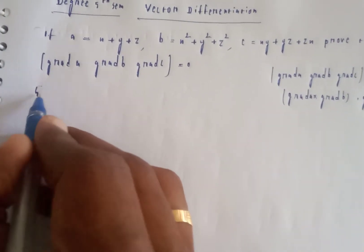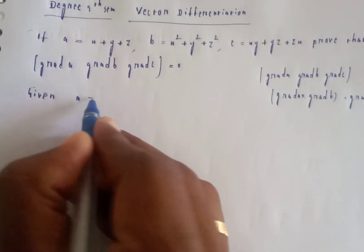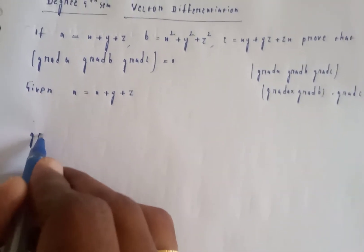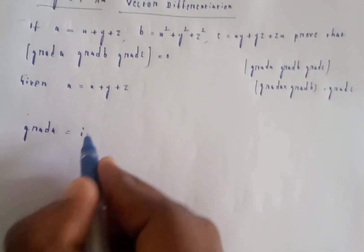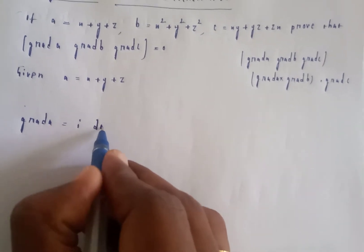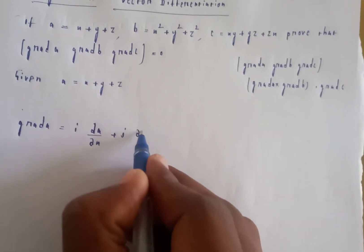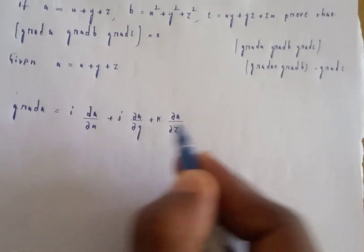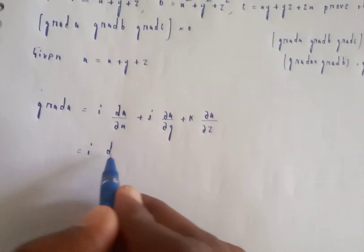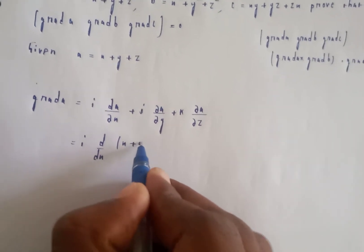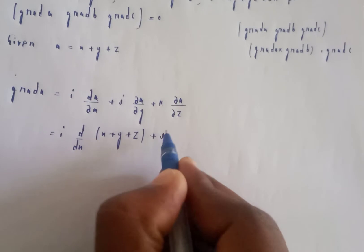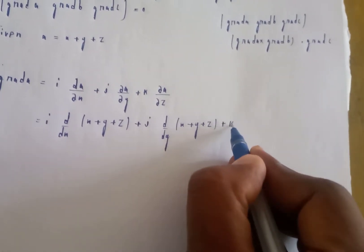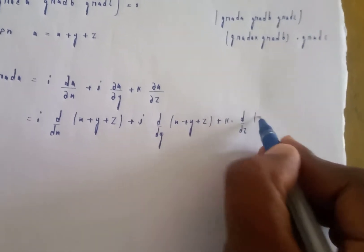First, given: a is equal to x plus y plus z. Now, grad a means i into partial derivative of a with respect to x, plus j into partial derivative of a with respect to y, plus k into partial derivative of a with respect to z. So we write i of d by dx of (x plus y plus z) plus j of d by dy of (x plus y plus z).